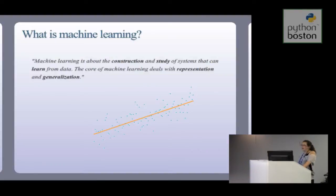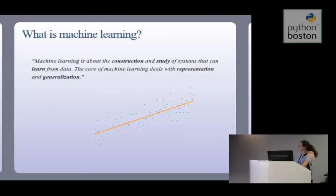Typically we have 2D data points, and in some cases we can fit a linear model. If a new data point arrives, we may be able to predict either a value, a label, or a ranking on it.